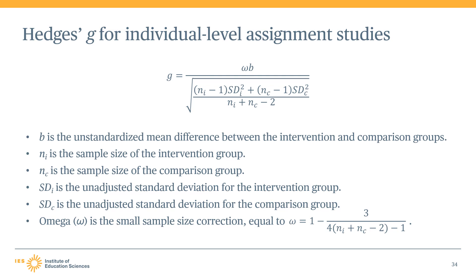The denominator of the effect size calculation represents the pooled standard deviation, and this is what standardizes the effect size to ensure it is in standard deviation units. In the denominator, Ni and Nc are the sample sizes for the intervention and comparison groups respectively. Sdi and Sdc are the unadjusted standard deviations for the intervention and comparison groups respectively, so the denominator represents the weighted average of both groups' standard deviations.